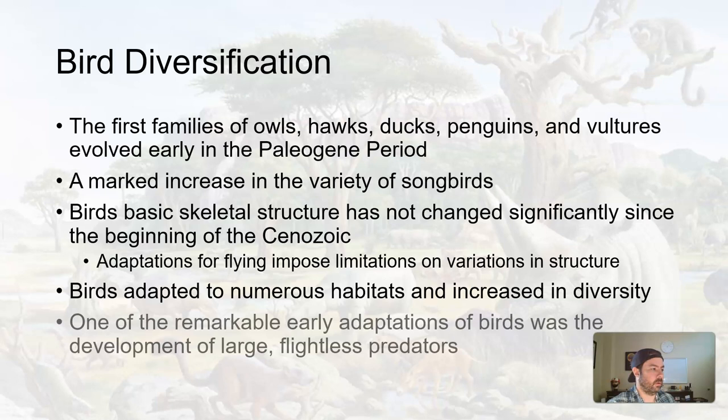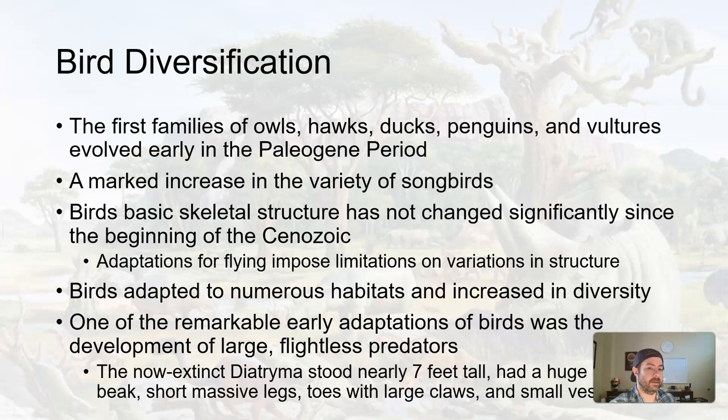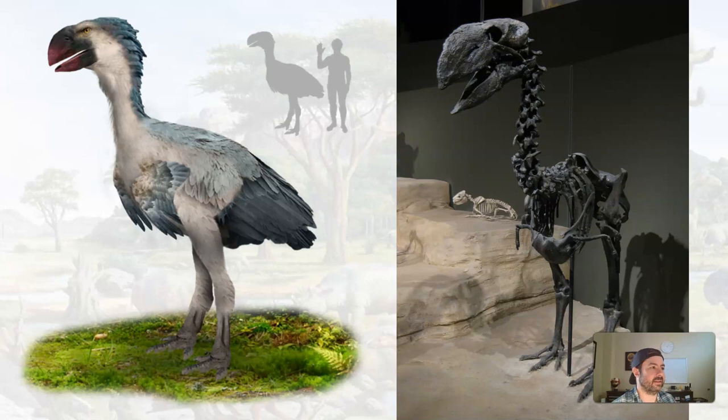One of the most remarkable adaptations of birds was the development of large flightless predator birds — the now-extinct Diatryma: a nearly seven-foot-tall bird with a huge head, huge beak, short legs, big claws, and little vestigial wings that don't really work for flying. You can see how big this thing is compared to a human — great fossils. This kind of reminds me of Kevin from Up. Big giant birds, these things roaming around — it was just a different world in the Paleogene.